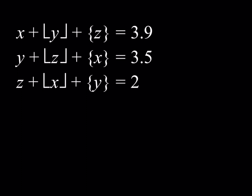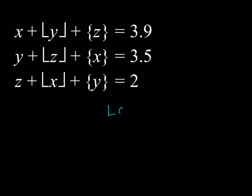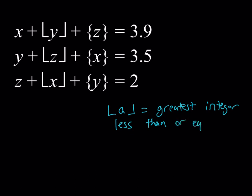So let's refresh our memories about those two functions. The floor value of a number a is basically the greatest integer less than or equal to a. That's basically what we're talking about — it's kind of like rounding the number down.